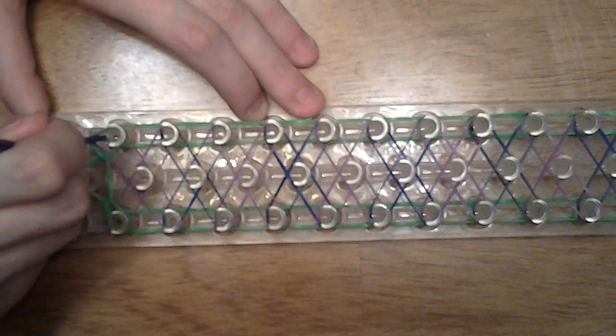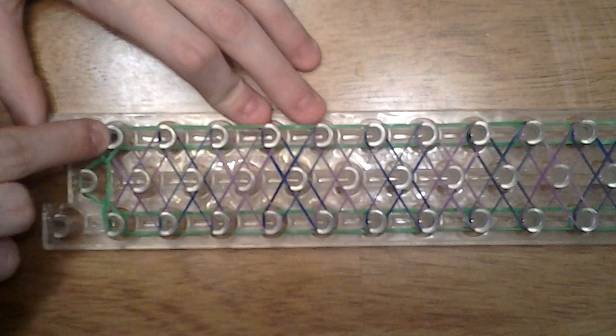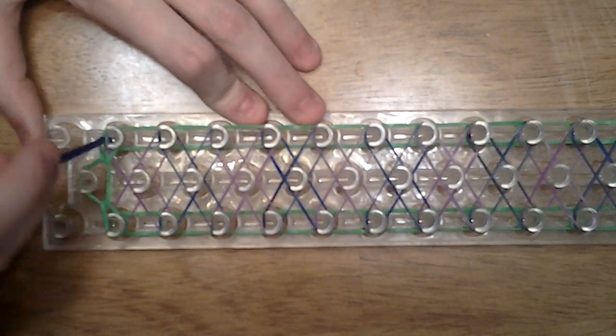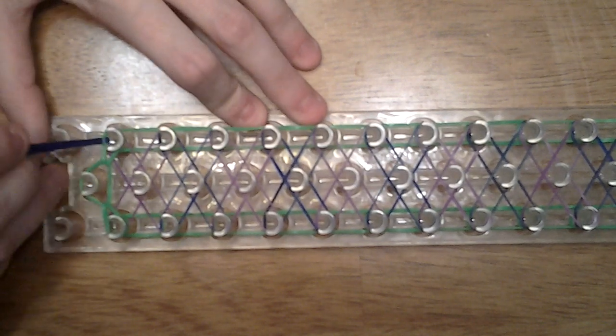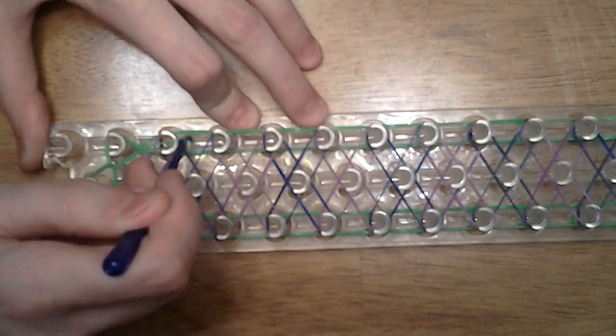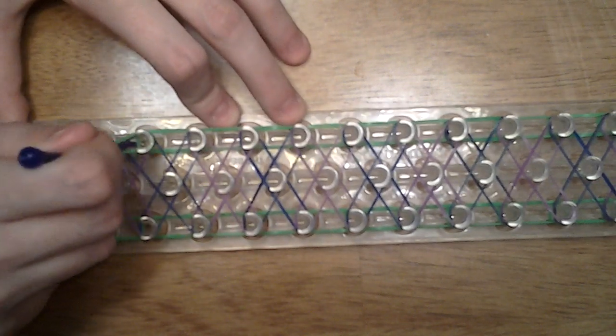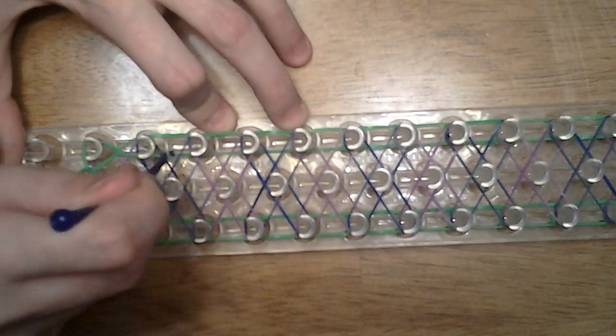Anyway, continuing on with our bracelet, you're going to go to the left hand side, into the second peg there, grabbing the bottom green band. Carefully remove it from its peg and place that going forward. Just like that. The same thing up the left hand side, only looping the green bands.